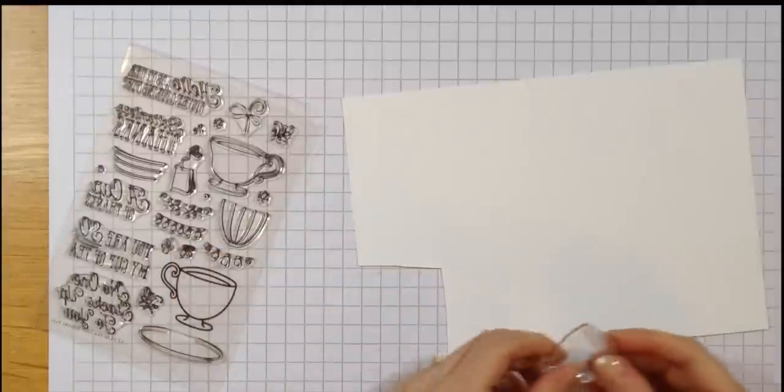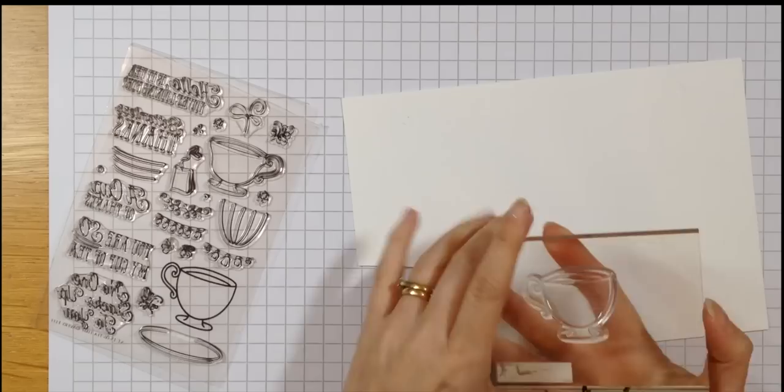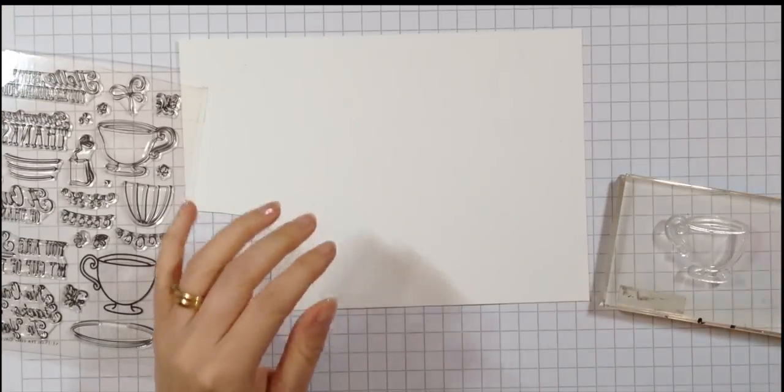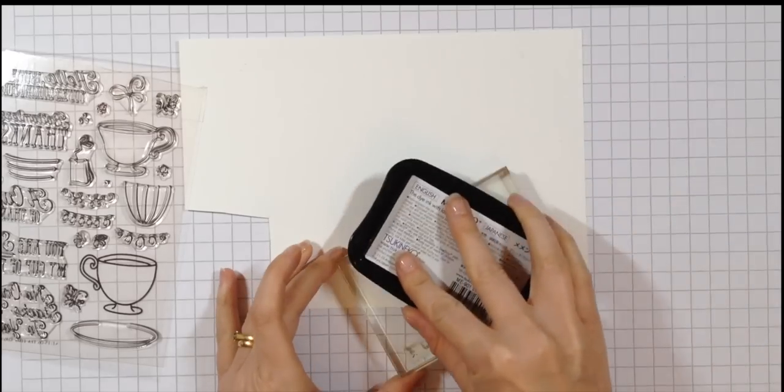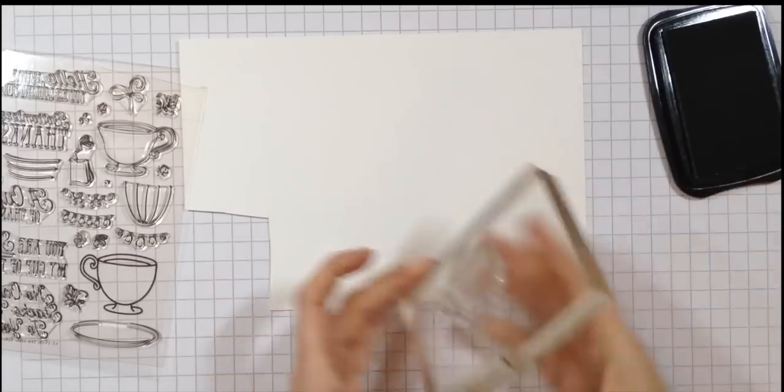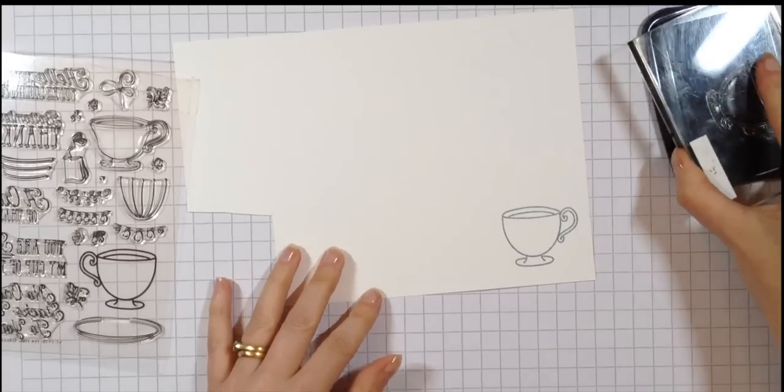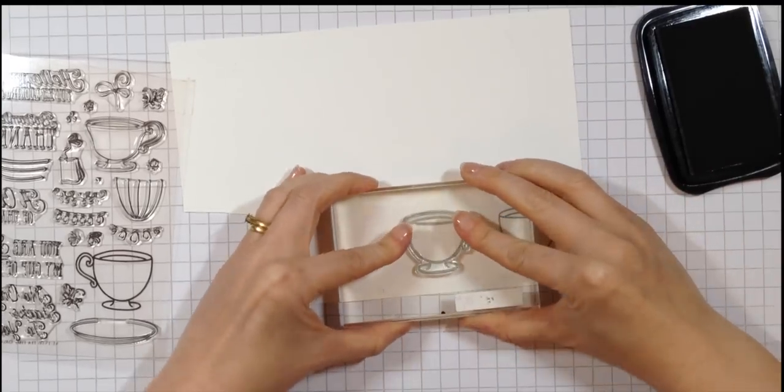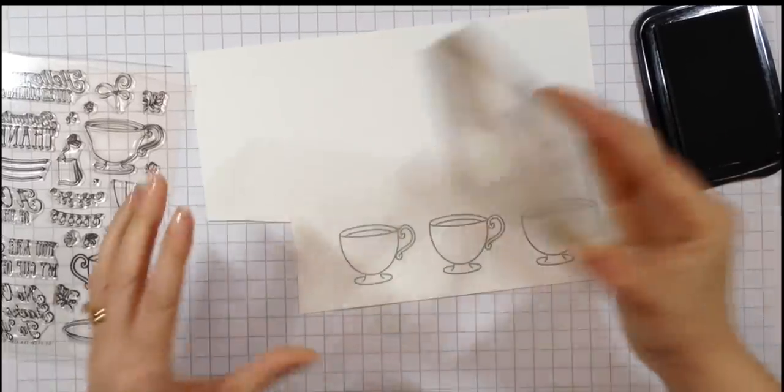I'm starting with some Neenah white cardstock, the 80-pound variety, and I'm going to be using Memento London Fog ink because I plan to color the images I'm stamping. I've taken one of the teacups and I'll be coloring those in with Copic markers.